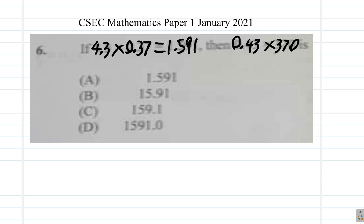It's blurry, so let me just read out in case you can't see it. Part A says 1.591, Part B says 15.91, Part C says 159.1, Part D says 1591.0.